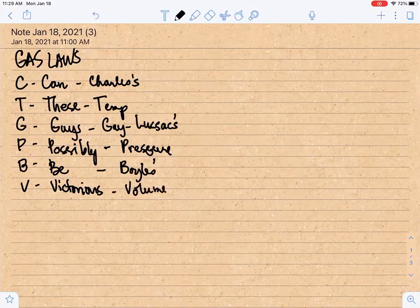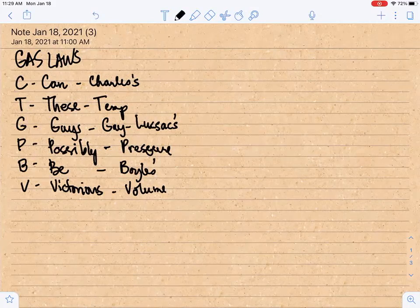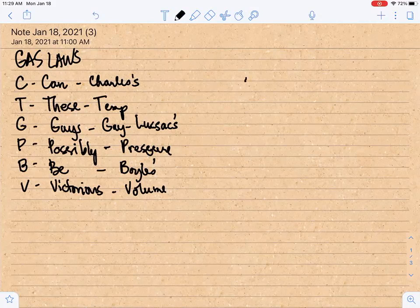So remember these words: can these guys possibly be victorious? So we will be using a diagram here to represent the relationship, or the mathematical relationship.